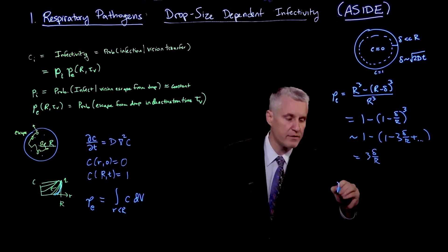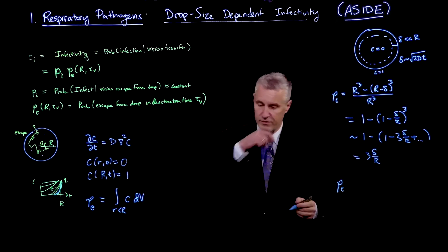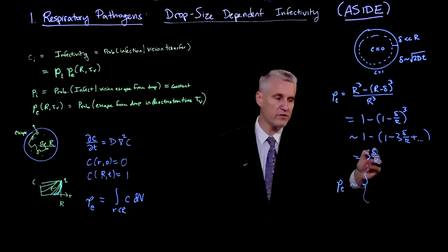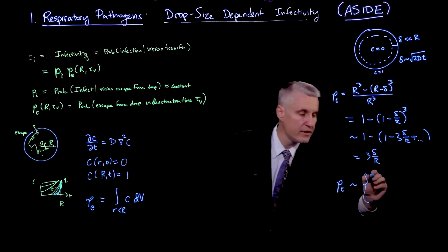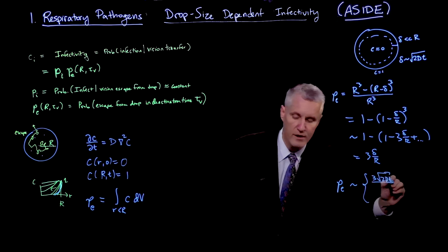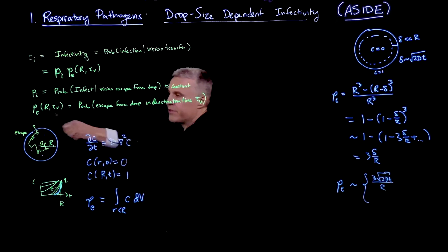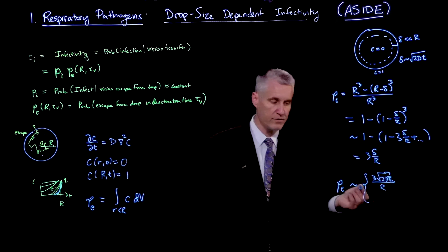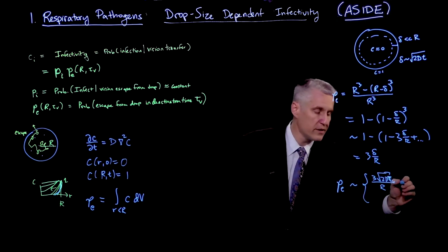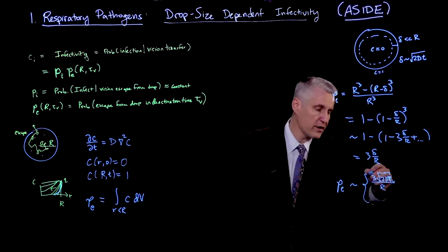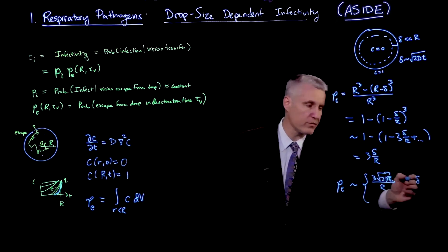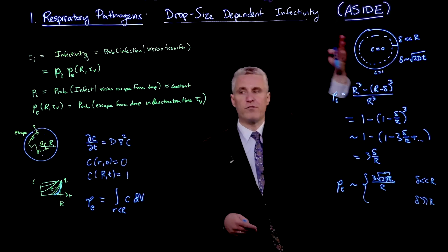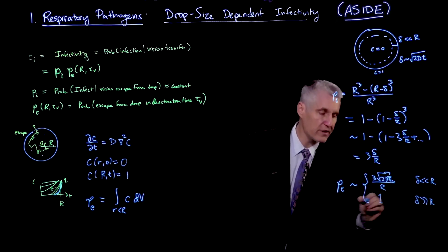So what we find is that this Pe, which we're trying to calculate, has two limits that are easy to calculate. One of them is 3δ/R. And if that's our delta, then we get 3√(2Dτv)/R. And specifically, the Pe is defined up to a certain time τv, the time scale for virus deactivation. This would be in the case where this ratio is much less than 1. And then in the opposite limit, where this diffusion has completely spanned the particle and it's getting much bigger than R, then this obviously has to tend to 1.